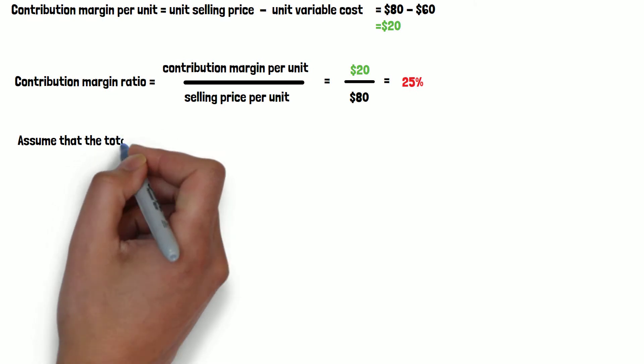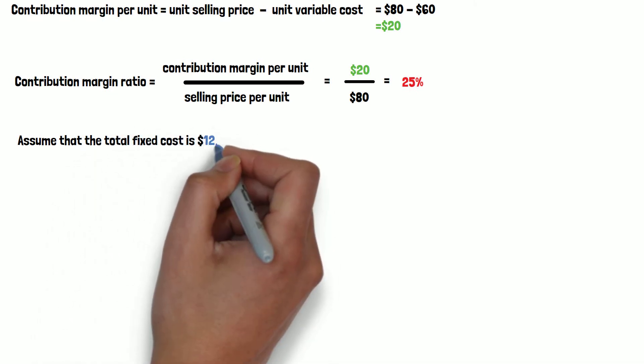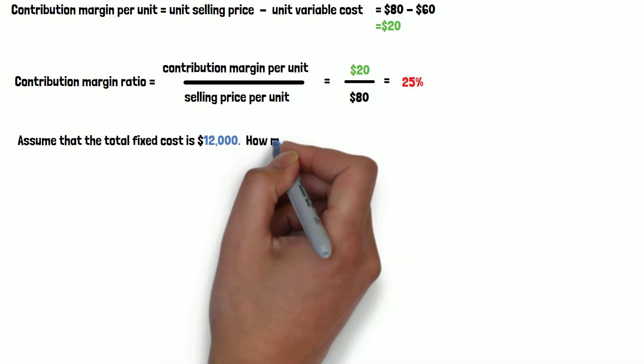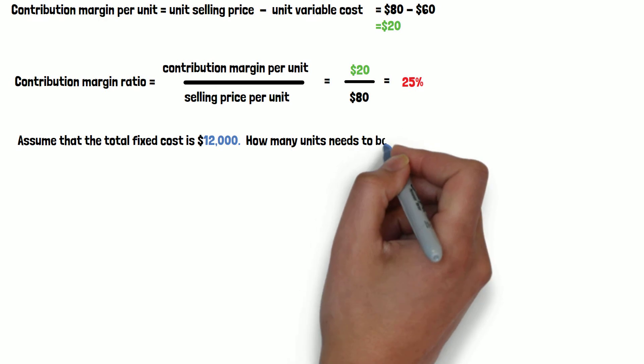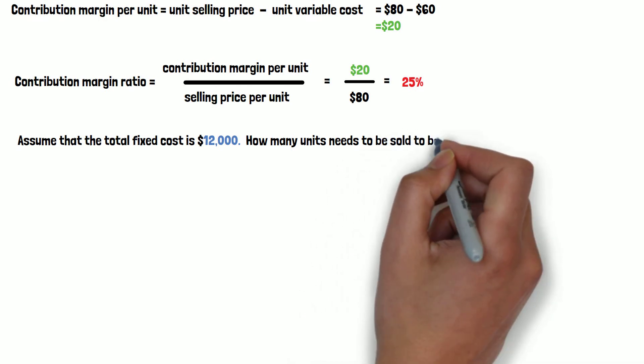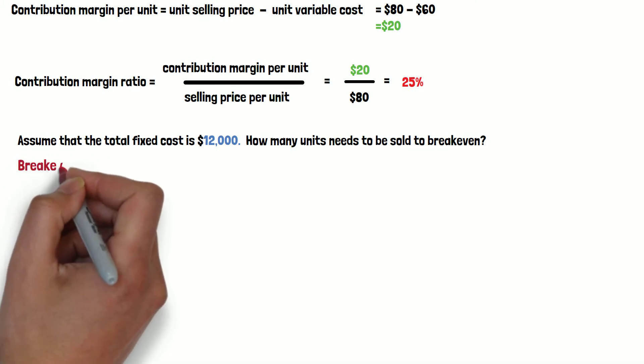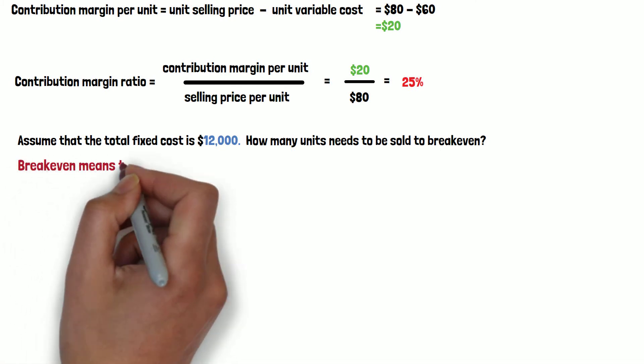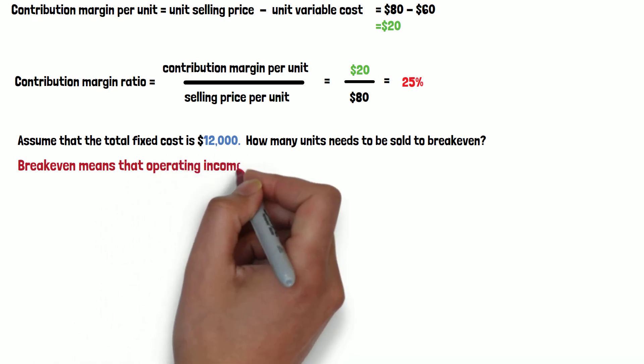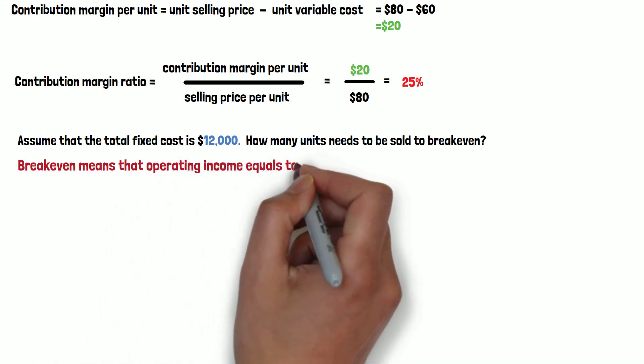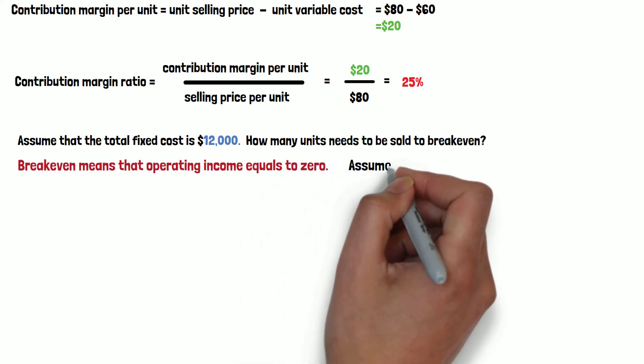Okay, so let's assume that the total fixed cost of manufacturing the furniture is $12,000. How many units we need to sell in order to break-even? So what do we mean by break-even? Break-even means that is the point where you have neither profit nor loss. So basically, your income is zero.